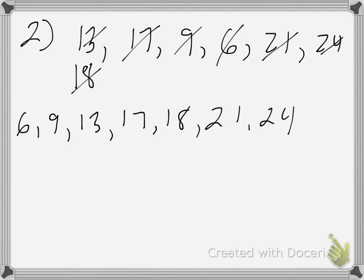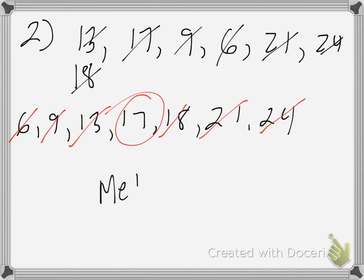This data set also has an odd number of items, so we can use the crossing-off technique. Cross off the 6 and the 24, then the 9 and the 21, then the 13 and the 18, leaving us with a very clear middle number: 17. So 17 is our median.